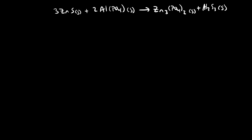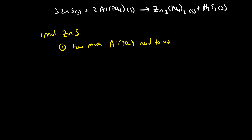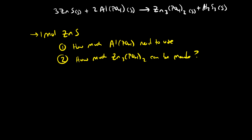If we know that we start off with exactly one mole of zinc sulfide, we're able to figure out lots of things: number one, how much aluminum phosphate we need to use; how much zinc phosphate we can make; and also how much aluminum sulfide could be made. These are all questions we can answer from the balanced chemical reaction.